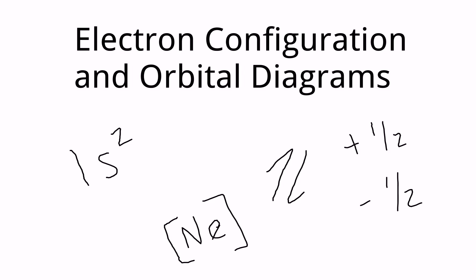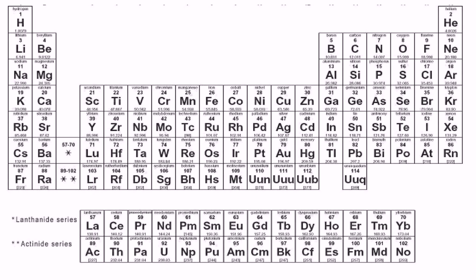Welcome back. This lecture is going to cover electron configurations and how to draw or represent orbital diagrams when dealing with atoms. This topic sometimes falls under different headings, but we're going to keep it in the chapter of periodic trends because you really need to understand how atoms are configured with their electrons before you can start understanding periodic trends along the periodic table. We'll get started on electron configurations and orbital diagrams.